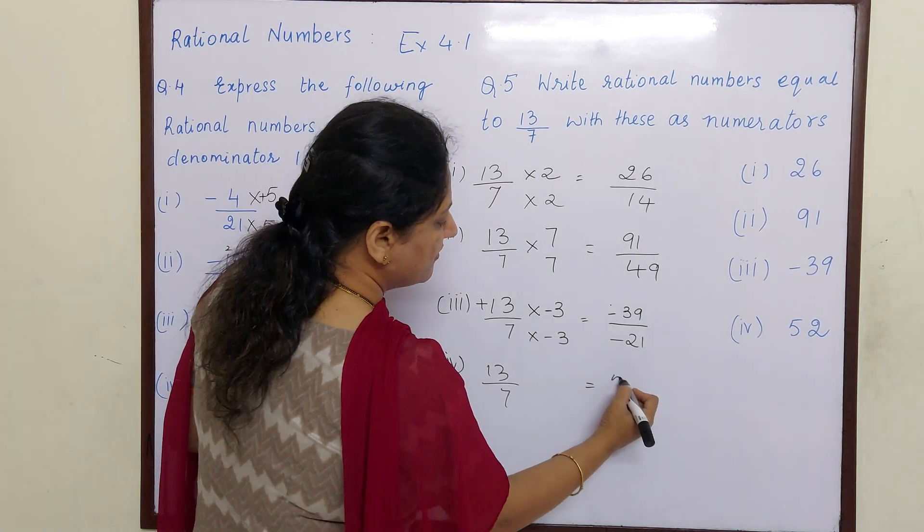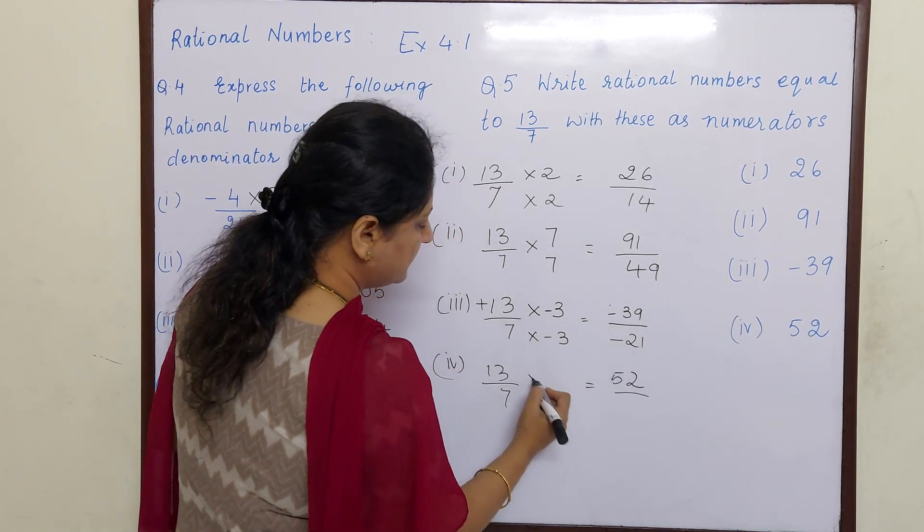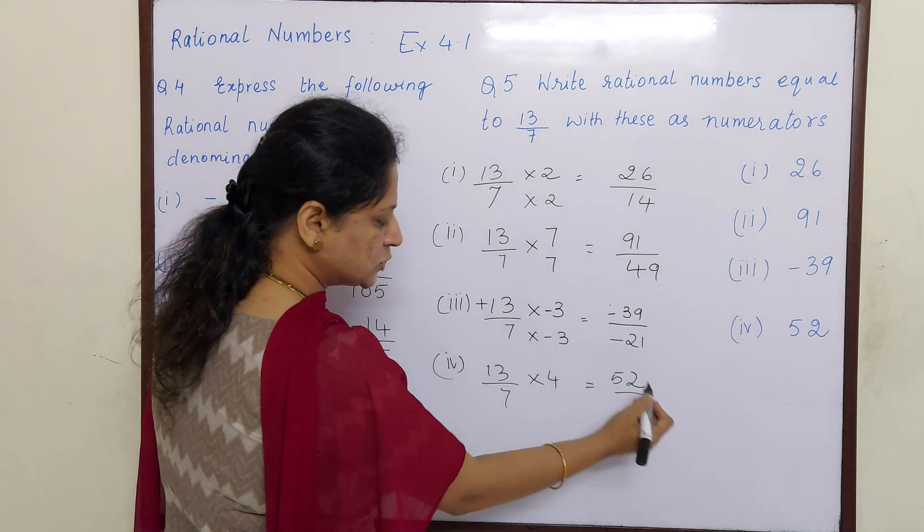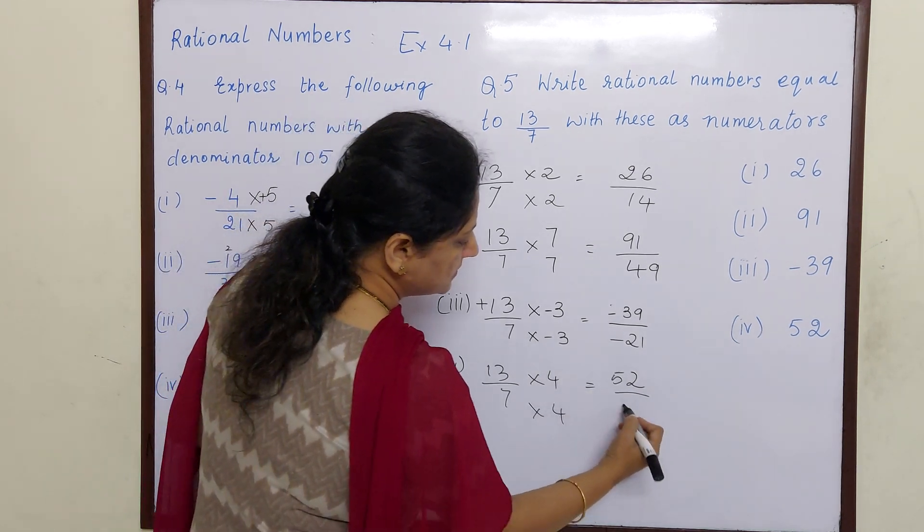And your last sum is 13 by 7. And your numerator should be 52. 13 fours are 52. 7 fours are 28.